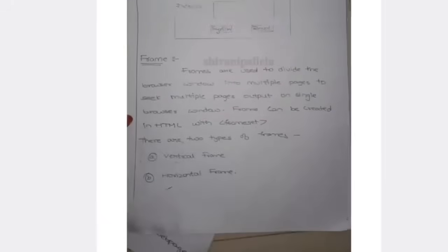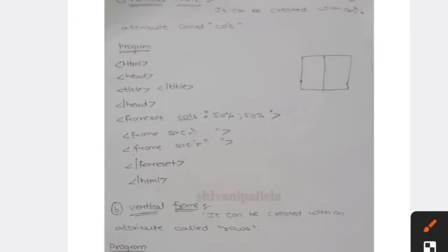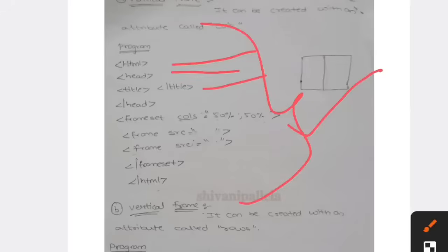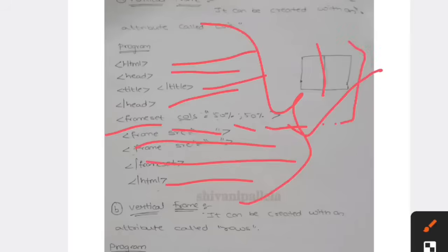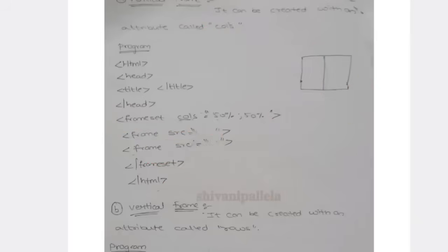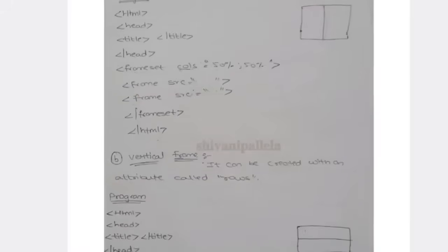Next you are having frame. In frames you will have vertical method and horizontal method. You can use vertical method, you can use horizontal method of frames. Vertical method means it is created like this - this is the output, this is the program. HTML head, title open, title close, head close, frameset column - column 50 50, 50 half, 50 half. And frame SRC, frame SRC, frameset close, HTML close. This is the program of vertical horizontal frame.